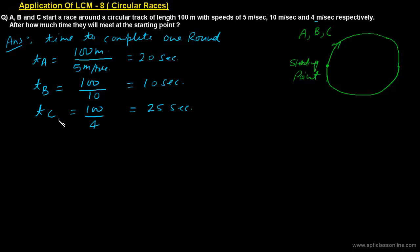So A completes one round in 20 seconds, B in 10 seconds, and C in 25 seconds. Since the question asks after how much time they will meet at the starting point, whenever they meet, each of them will be completing some full number of rounds. Since A completes one round in 20 seconds, A will be at the starting point only after multiples of 20 seconds.